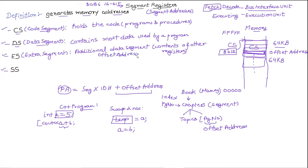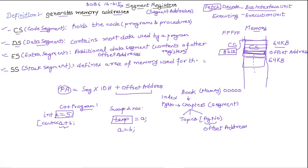The last one is the stack segment. The stack segment defines an area of memory — a memory space — used for the stack. We will study stacks in more detail in future tutorials. The basic reason we are studying segment registers now is that they are used in instructions. When we study movement instructions in assembly programming, we will use CS, DS, ES, and SS, so it's essential to know what these are used for and the working idea behind them.